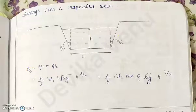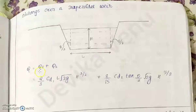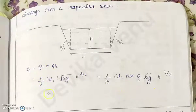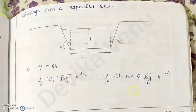Q total is equal to Q1 plus Q2. Q1 is the discharge of the rectangular weir and Q2 is the discharge of the triangular weir. These are the two equations for that. The combination of these two will give you the discharge over a trapezoidal weir.